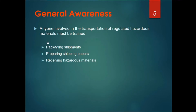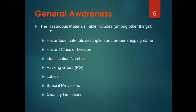Anyone involved in the transportation of regulated hazardous materials must be trained in packing shipments, preparing shipment papers, and receiving hazardous materials. The hazardous materials table includes, among other things: hazardous materials descriptions and proper shipping names, hazardous class or division, identification number, packing group, label, special provisions, and quantitative limitations.